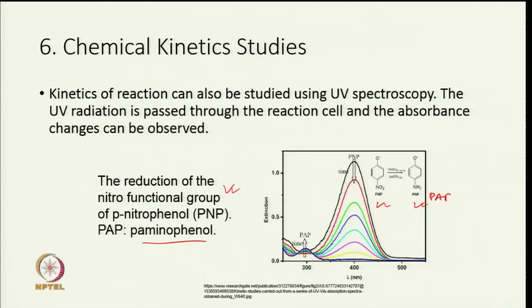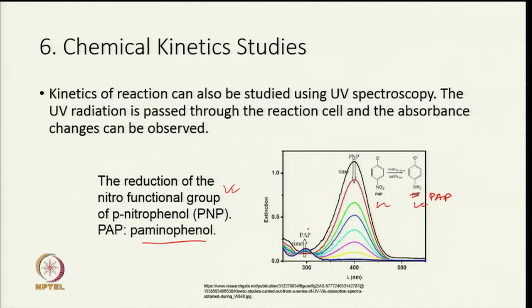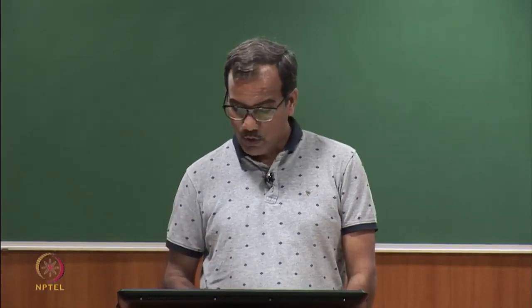PNP decreases with increasing time whereas PAP increases, meaning PNP is getting converted into PAP. We can look at −d[PNP]/dt or d[PAP]/dt to know the rate of reaction. Kinetics is quite often used to understand the mechanism of the reaction, and UV visible spectroscopy can be used to observe the kinetics.